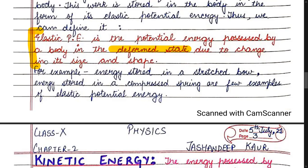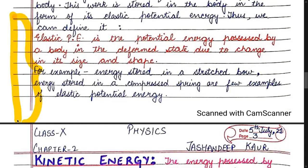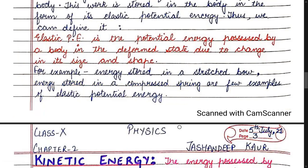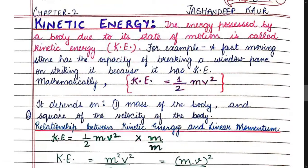Learn this definition of elastic potential energy — it is very important. Examples include: energy stored in a stretched bow (where you stretch the thread to propel an arrow), and energy stored in a compressed spring.